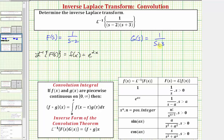Looking at G(S), you might want to rewrite this as one divided by the quantity S minus negative three, so it better fits the form from the table. The inverse Laplace transform of G(S) equals g(x), which again looking at the table would use this formula where A equals negative three, so g(x) equals e raised to the power of negative three x.